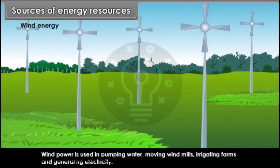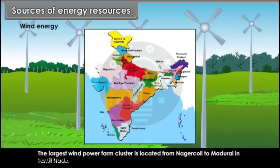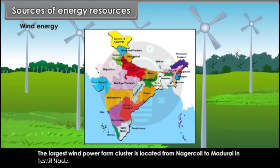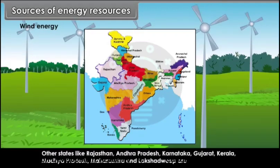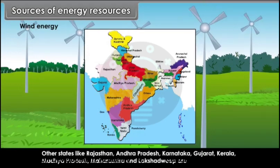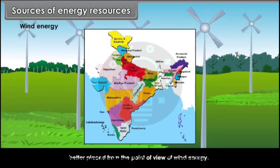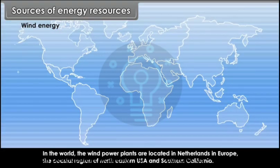Wind energy: Wind power is used in pumping water, moving windmills, irrigating farms and generating electricity. The largest wind power cluster is located from Nagarkoil to Madurai in Tamil Nadu. Other states like Rajasthan, Andhra Pradesh, Karnataka, Gujarat, Kerala, Madhya Pradesh, Maharashtra and Lakshadweep are also well placed for wind energy. In the world, wind power plants are located in the Netherlands in Europe, the coastal region of Northeastern USA and Southern California.